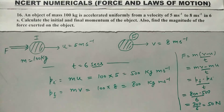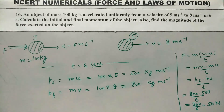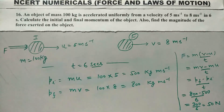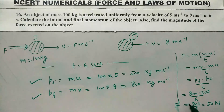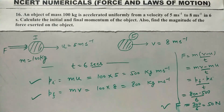तो पहला था initial momentum = 500 kg·m/s, दूसरा final momentum = 800 kg·m/s, और तीसरा हमें force निकालना था जो कि 50 Newton है। यह हमारा final answer है। (Summary: initial momentum = 500 kg·m/s, final momentum = 800 kg·m/s, and force = 50 Newton.)